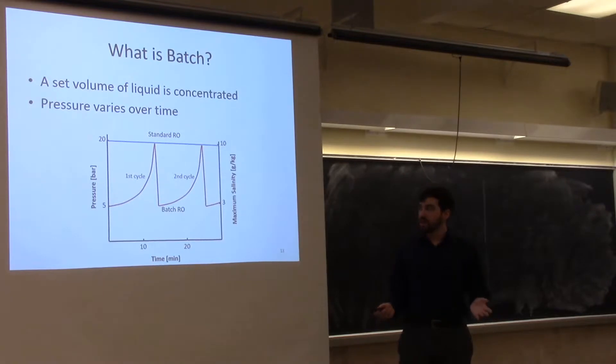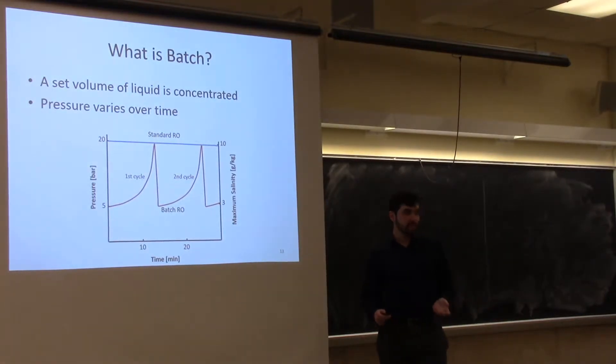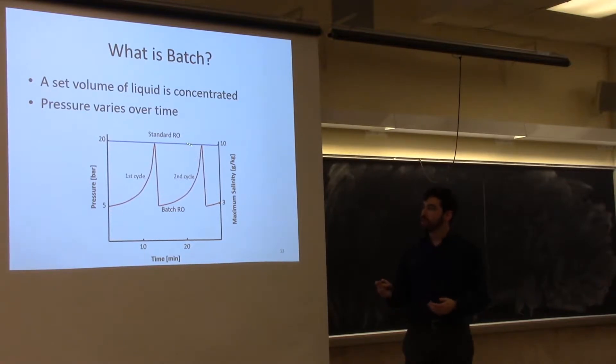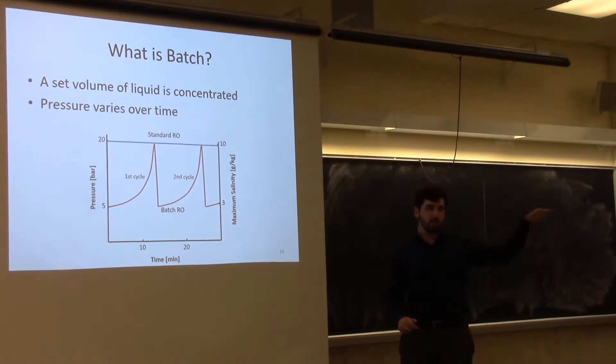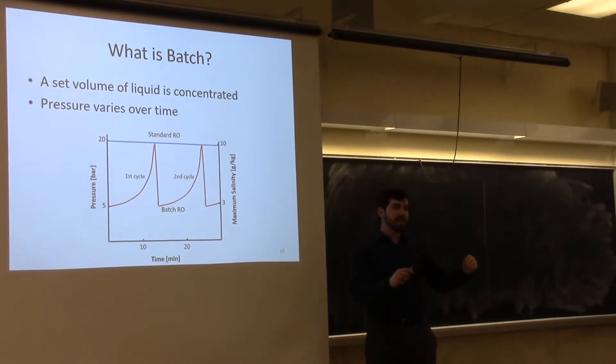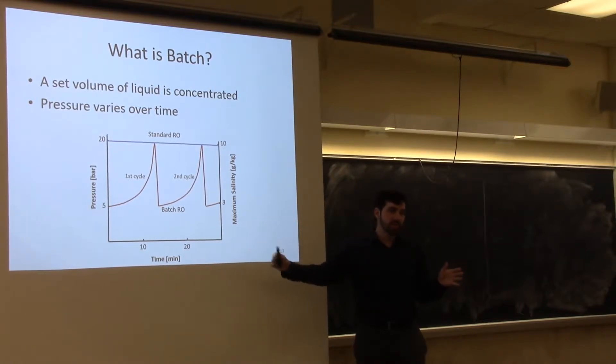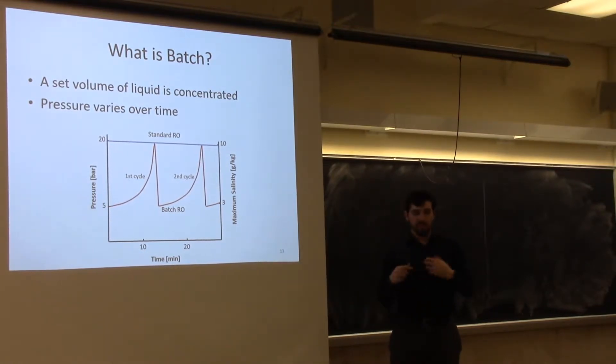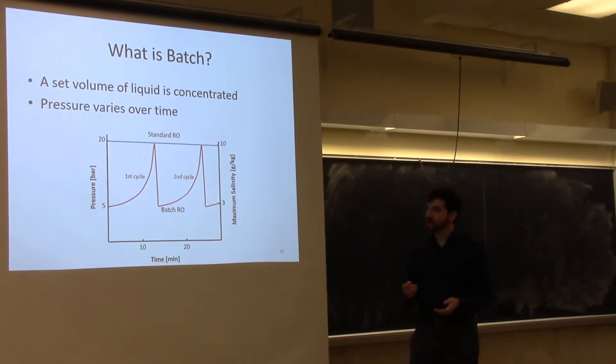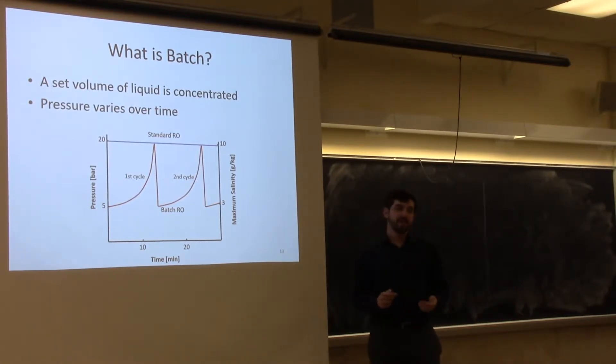This is in stark contrast to a standard reverse osmosis process which operates in a continuous fashion. A standard process will have one constant salinity and the salinity will increase as it goes farther along the membrane modules and will not change until they do a clean maybe once or twice a week. Meanwhile, in a batch process, we're proposing that even on the order of minutes, we're having a very large cycling of the pressure and the salinity that occur in the system.